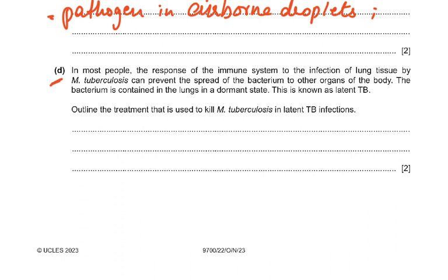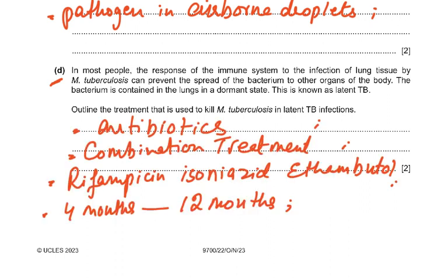In most people, the immune system can contain M. tuberculosis in the lungs in a dormant state — known as latent TB. The treatment used to kill M. tuberculosis in latent TB infections is antibiotics — a combination of different antibiotics such as rifampicin, isoniazid, pyrazinamide, and ethambutol — for a period of four to twelve months. Combination treatment is shorter than using single antibiotics.